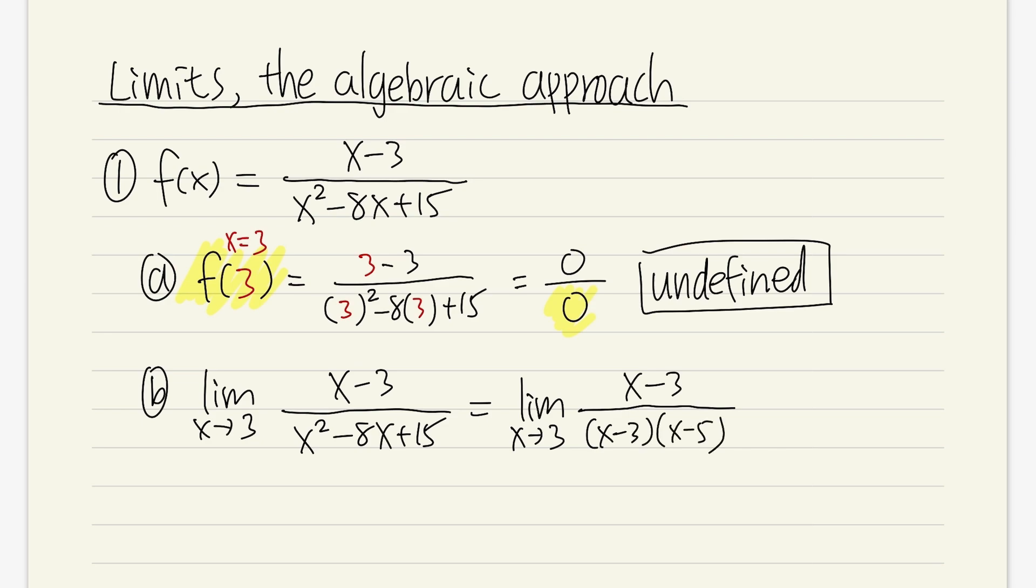Aha! We can cancel out the x minus 3 and x minus 3. And in fact, this cancellation also cancels out the 0 over 0 case. And what does 0 over 0 represent? I will tell you that after we finish this. So once we cancel out the x minus 3 on the top and bottom, then we can actually just plug in the 3 into the remaining x.